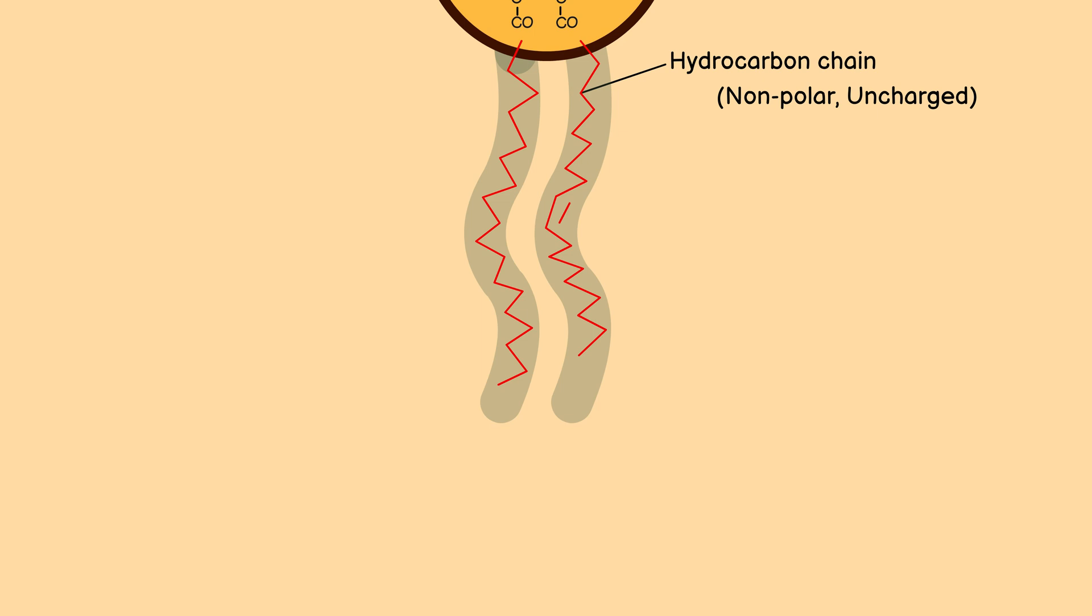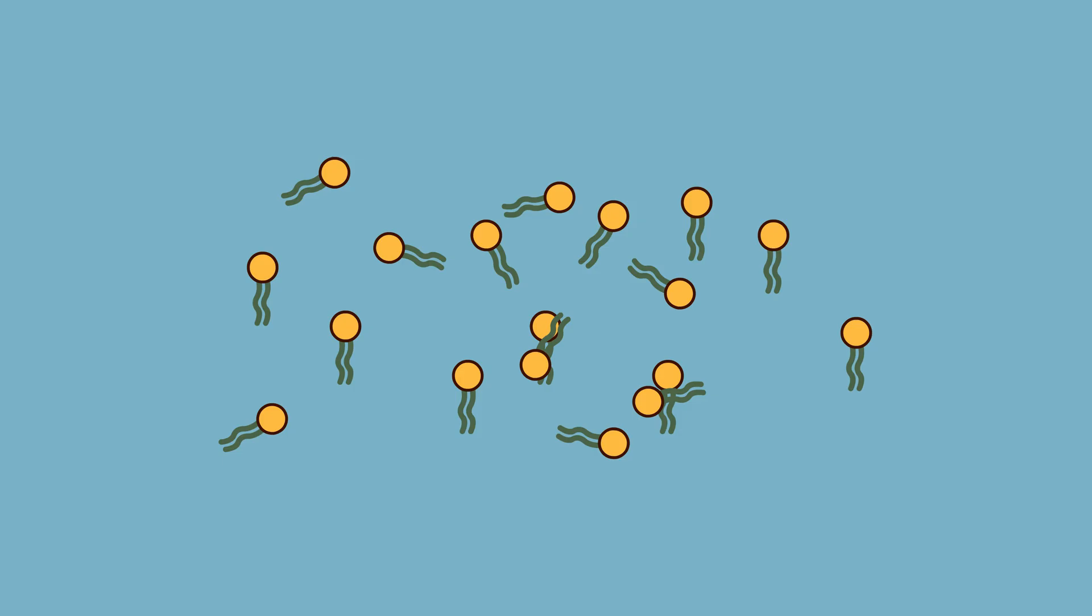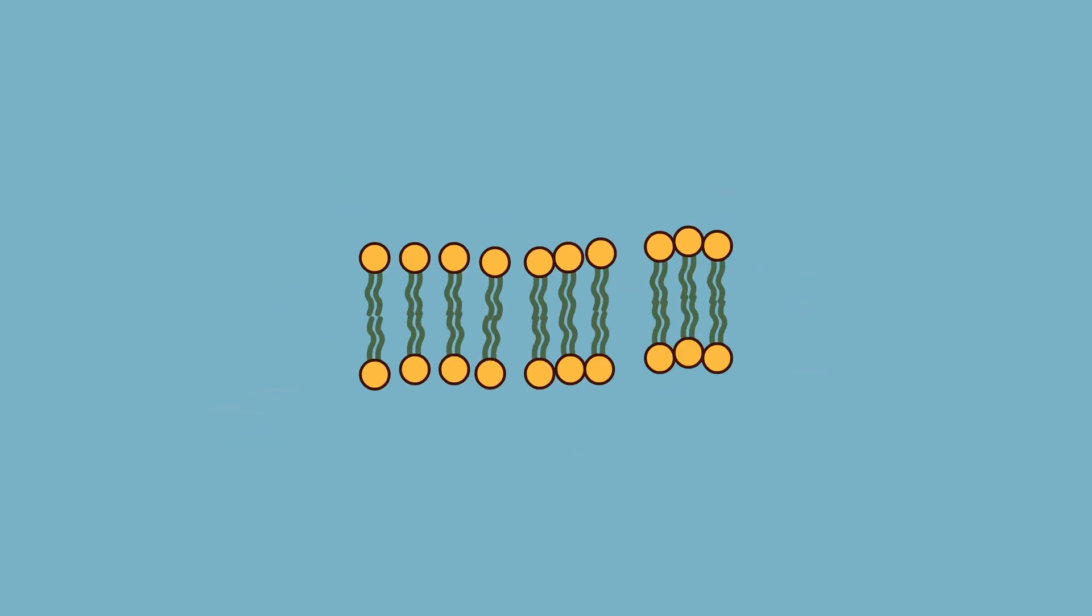Because of this, the tails are hydrophobic, and they avoid water. When phospholipids are placed in an aqueous environment, the tails instinctively cluster together, trying to minimize their exposure to water, and ultimately form the phospholipid bilayer of the plasma membrane.